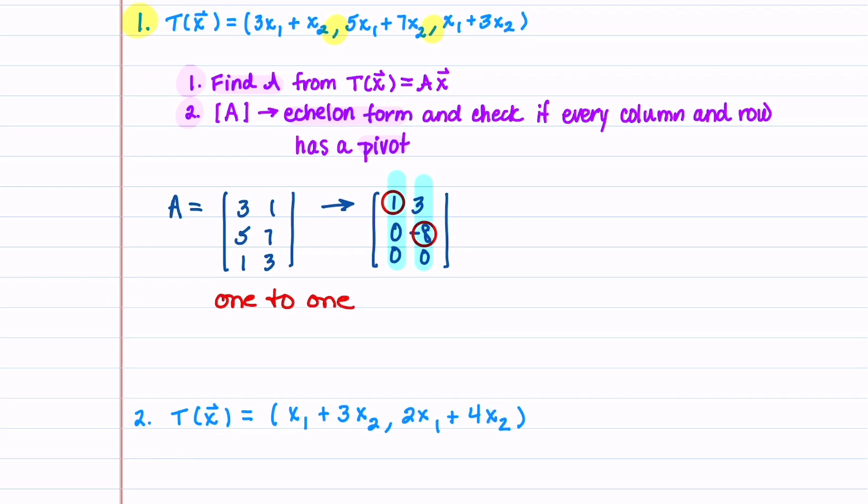Now let's look at the rows. Our first two rows have a pivot, but our last row does not have a pivot. And because of that, our matrix is not onto.